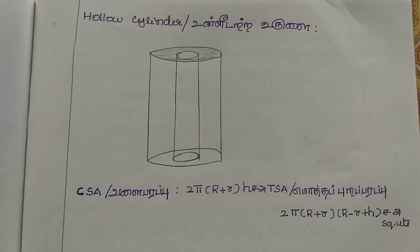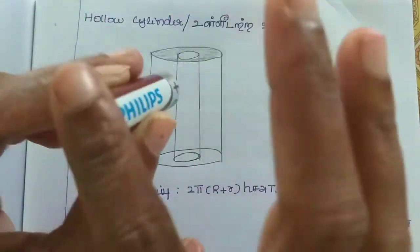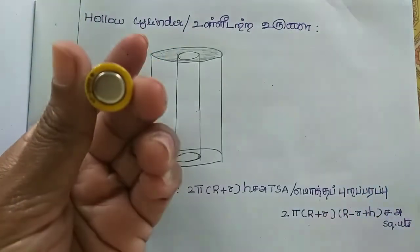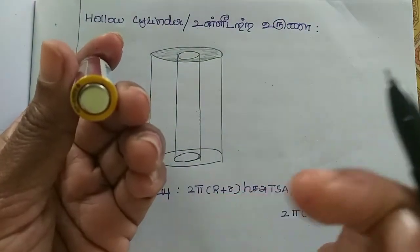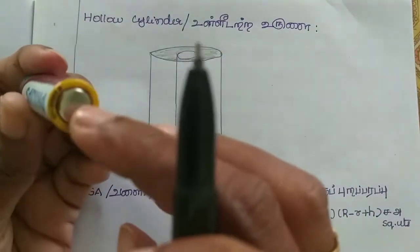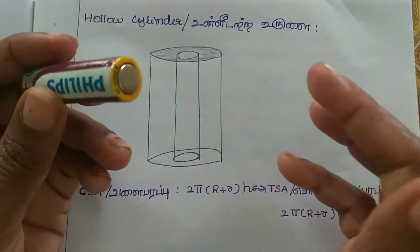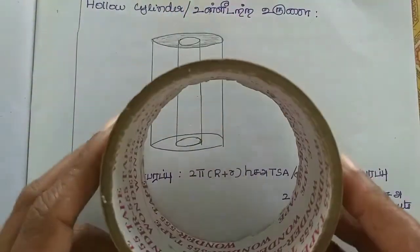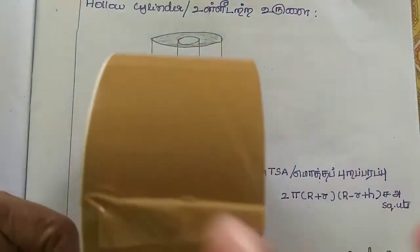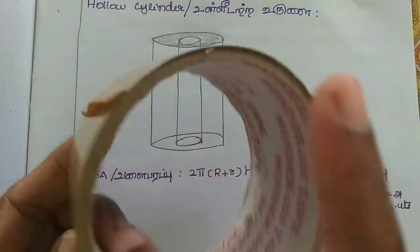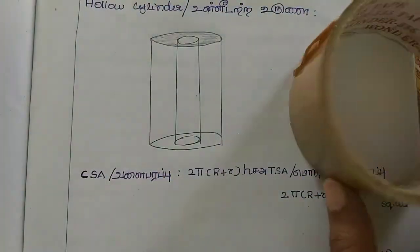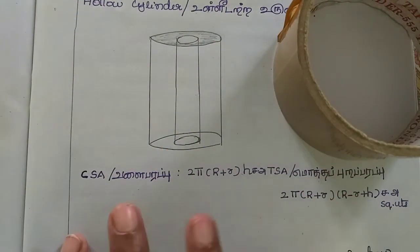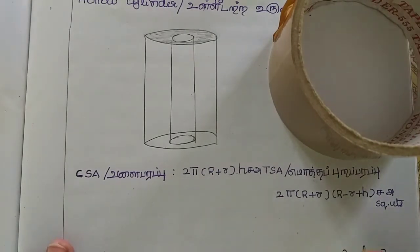If you see the hollow cylinder, it is fully covered. You can see it in the middle of the corner — that one is the hollow cylinder. For example, this one is a hollow cylinder. If you see this here, it is a hollow cylinder. This is a hollow cylinder.